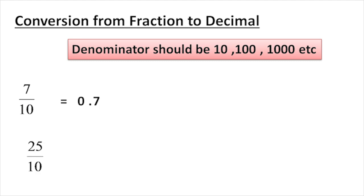Now consider 25 with denominator 10. The denominator is 10, so we get 1 decimal digit. For the number 25, we place the decimal point to get a 1-digit decimal. If the denominator is 10, the decimal point moves 1 place — giving 2.5.